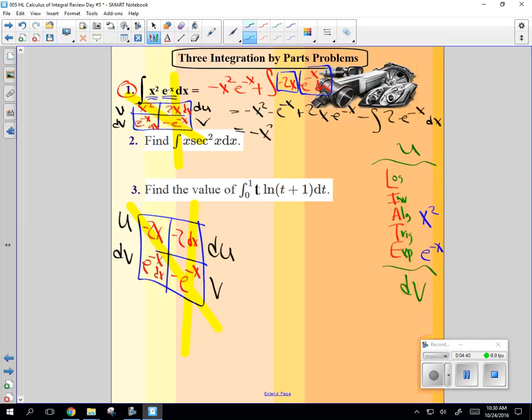Negative x squared times e to the negative x. Plus 2x e to the negative x minus 2. What's the antiderivative of e to the negative x again? Yeah, you've got to have that negative. This will be a positive e to the negative x plus c.